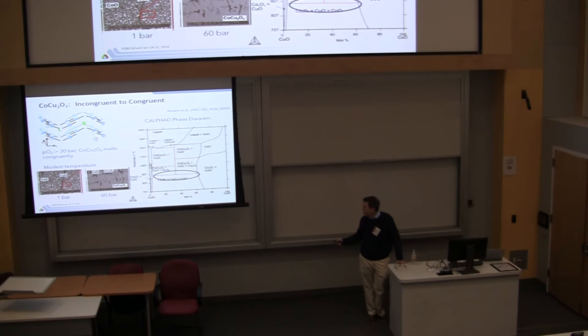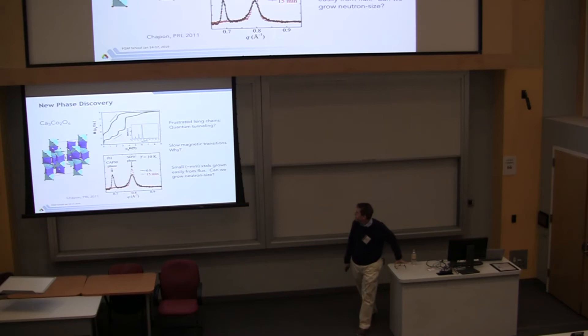Okay, so actually I lied. This one's not from my lab. This is from Dresden. And so this is this example of changing something from an incongruently melting compound to a congruently melting compound. And congruently melting compounds are much easier to grow. So here's a phase diagram. It's a calculated phase diagram using this CALPHAD software. And they were interested in looking at this spin ladder compound.